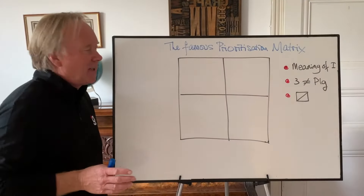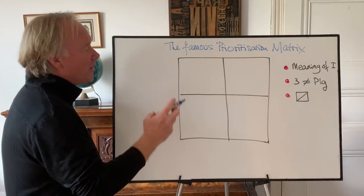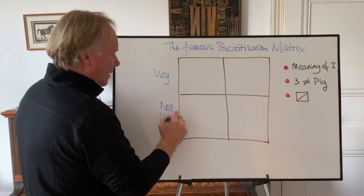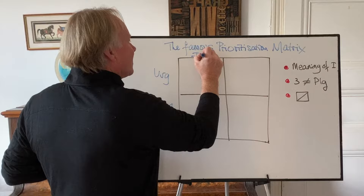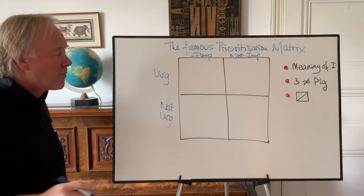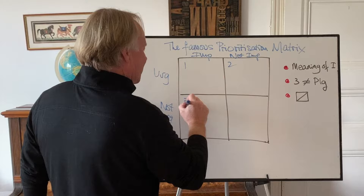You will have seen the famous prioritisation matrix. What this matrix says is that some things are urgent, some things are not urgent — there's a sliding scale of urgency — and then some things are important and some things are not important, with a sliding scale of importance. Box one, urgent and important, is the crisis box: drop everything and do it now.